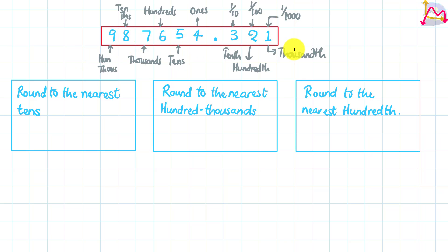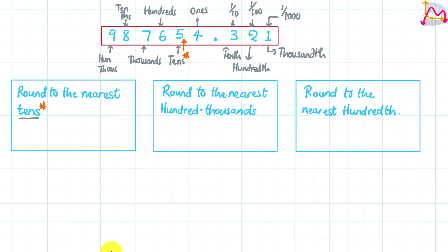Once we're able to assign place values to all the digits, we are now going to use these to determine the number rounded to the nearest tens. The question asks for the tens place, which means that is our target place value. We find that our tens digit on this number is five, and we are now going to look at the digit that comes right after it.